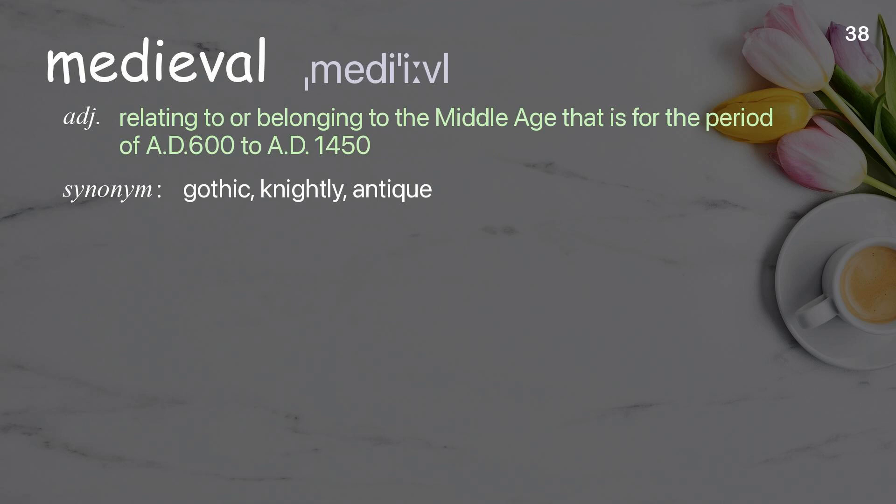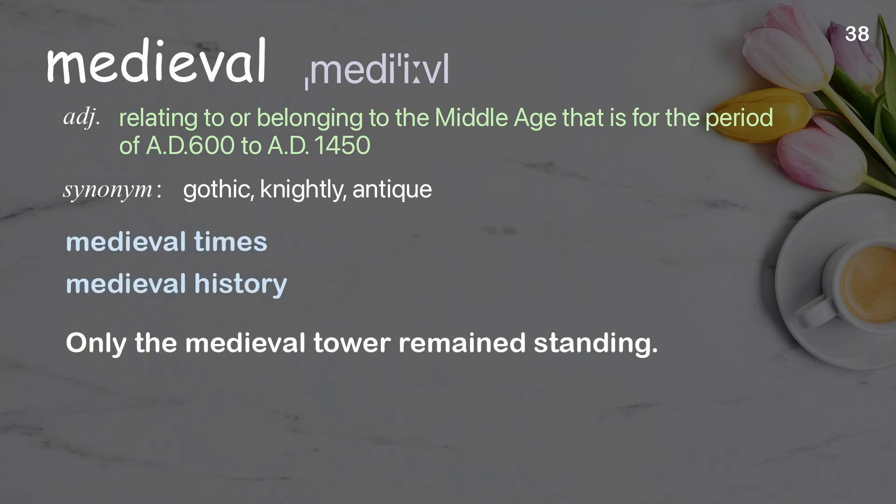Medieval: Relating to or belonging to the Middle Ages, that is, the period of A.D. 600 to A.D. 1450. Examples: Medieval times. Medieval history. Only the medieval tower remained standing.